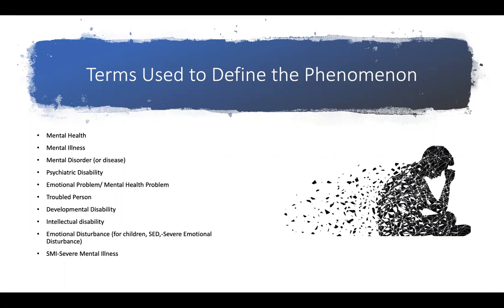Some more technical terms might be a psychiatric disability, developmental disability, or an SMI — severe mental illness — or emotional disturbance. Regardless, all of these terms are referencing some degree of positive or negative symptoms associated with mental health.